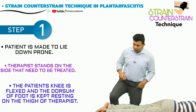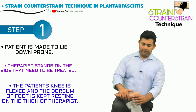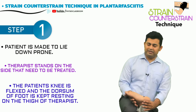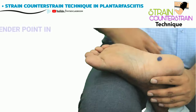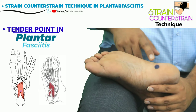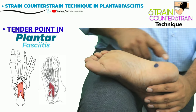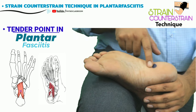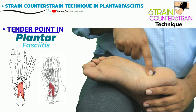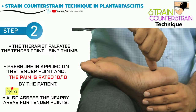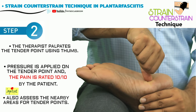The therapist next places one foot over the couch, then flexes the patient's knee and places the dorsal aspect of the patient's foot over the thigh. The recommended tender point to be assessed in a plantar fasciitis patient lies just anterior to the calcaneum bone, over the attachment of the quadratus plantae muscle.